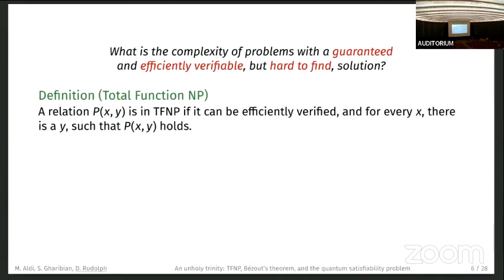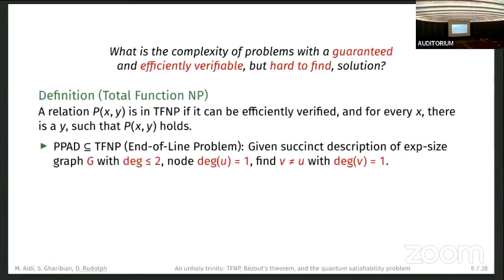This complexity class is called TFNP, total function NP. We say a relation is in TFNP if it can be efficiently verified, and for every X there exists a Y such that the relation holds.